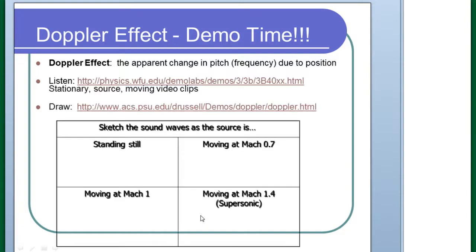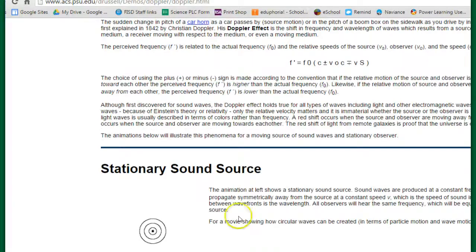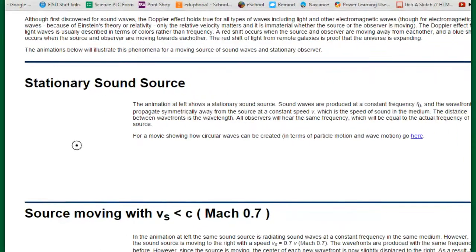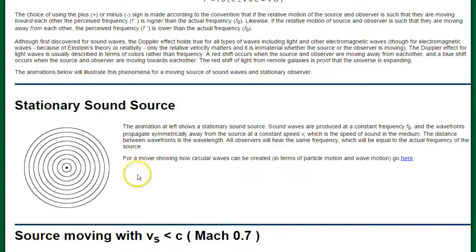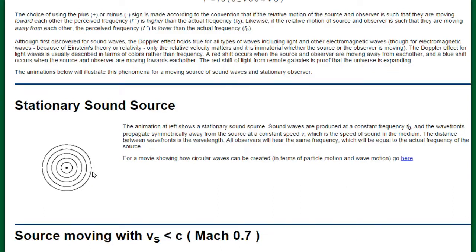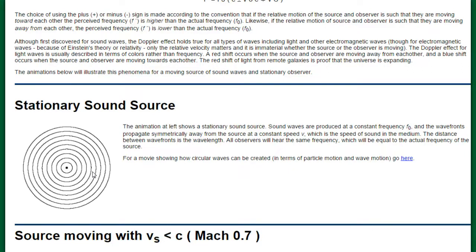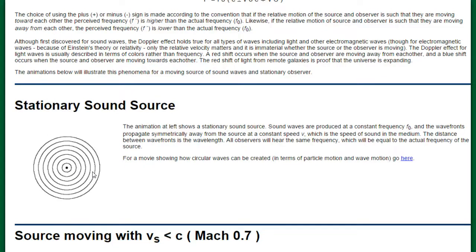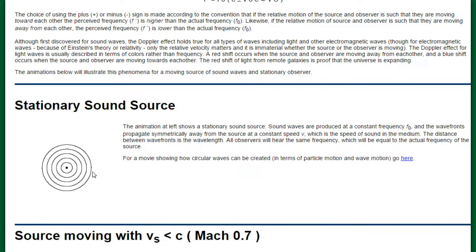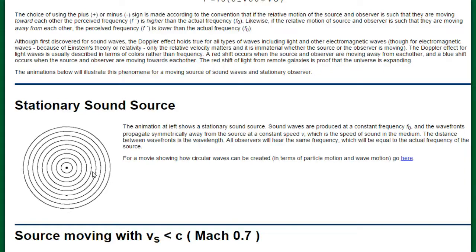So in your notes you have this Doppler effect section with some boxes. I want you to sketch what I'm going to show you. We're going to start with a stationary sound source. Let's say this is a car honking its horn — something producing sound. The sound is radiating out in all directions and it looks kind of like a bullseye. All the sound waves are radiating out at the same speed; the lines represent compressions of a sound wave, and all the waves stay the same distance apart.